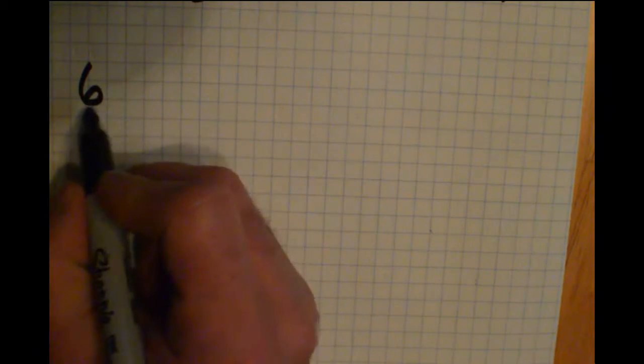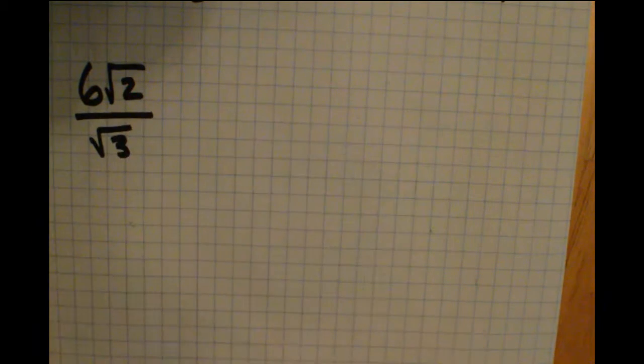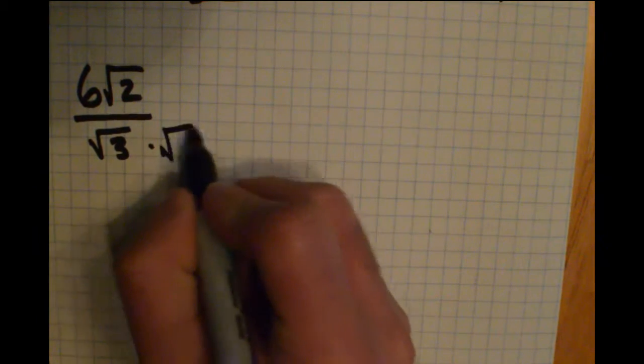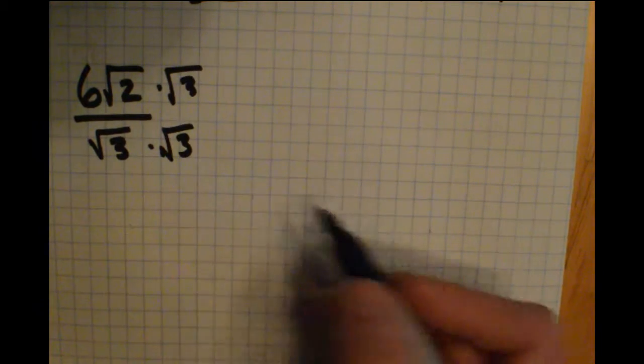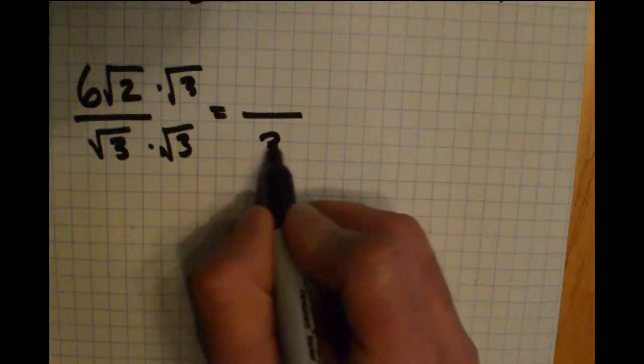Sometimes you'll need to simplify a little more afterwards, so let's take an example like 6 radical 2 over radical 3. Let's see what this simplifies to. We want to get rid of this radical that's in the denominator. So multiplying by radical 3 and radical 3, that's going to clear out that radical in the bottom. So what we get, radical 3 times radical 3, that's just plain 3.